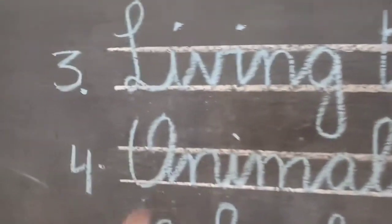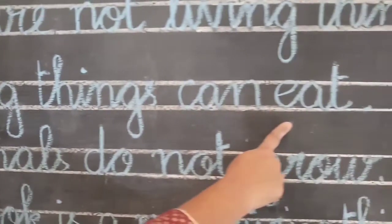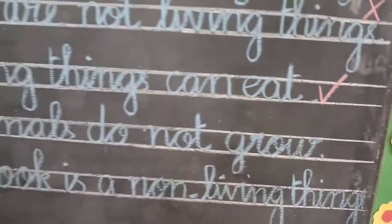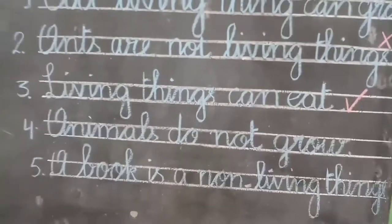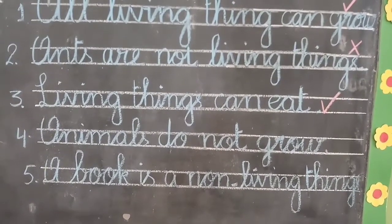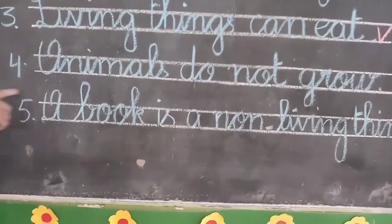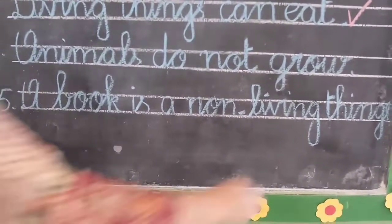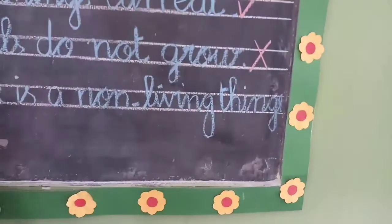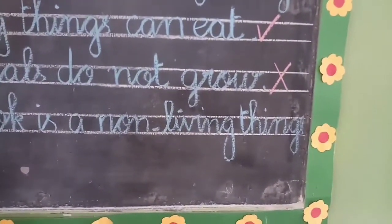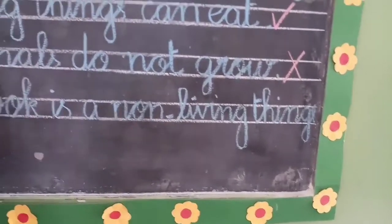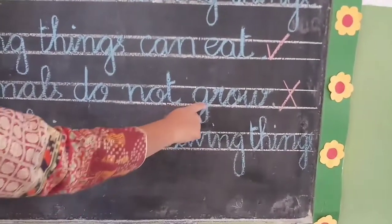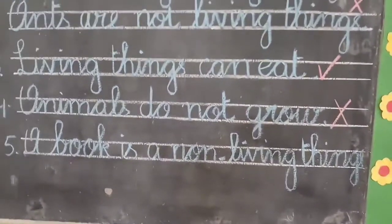Number three: living things can eat. True — yes, living things can eat. Kyunki jo jaan rakhti hain, jo cheezein, wo khaa-pee sakti hain. Number four: animals do not grow. It's cross — it means false. Because animals can grow, wo badh sakte hain.